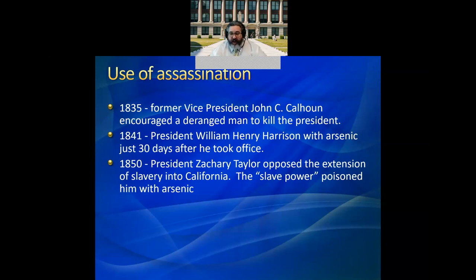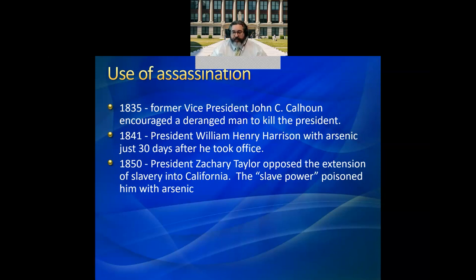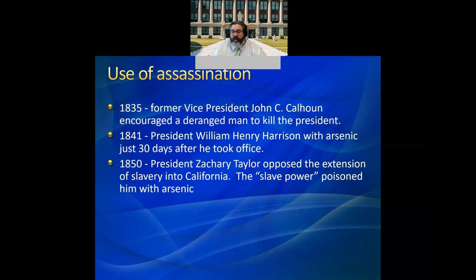In 1841, Dye argued the slave power poisoned William Henry Harrison. Harrison opposed the annexation of Texas because he believed it would be divisive to the Whig Party, so he was bumped off — killed with arsenic poisoning 30 days into office. In 1850, Dye argues that the slave power poisoned Zachary Taylor with arsenic as well, even though Taylor had generally been a pro-slaveholder.